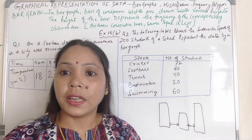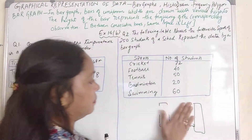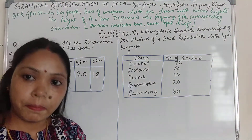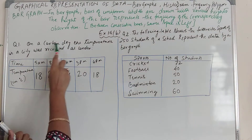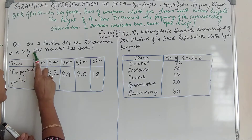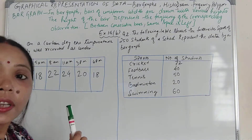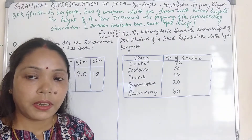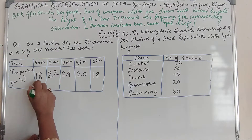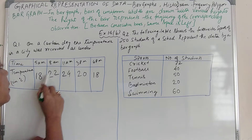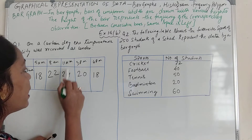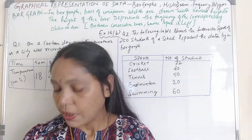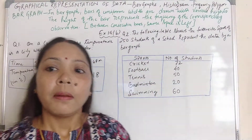Let's try this with the help of two questions. I have taken two questions from your exercise 14B. The first question is: on a certain day, the temperature in a city was recorded as under. Here data is given — time and temperature. At 5 a.m. the temperature is 18 degrees, at 8 a.m. 22 degrees, at 11 a.m. 24 degrees, at 3 p.m. 20 degrees, at 6 p.m. 18 degrees. We have to represent this with the help of a bar graph.